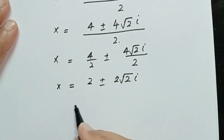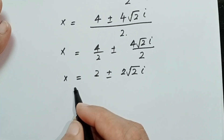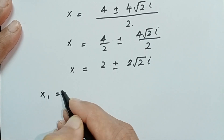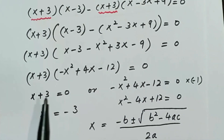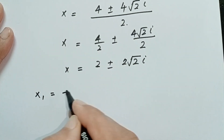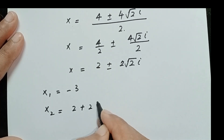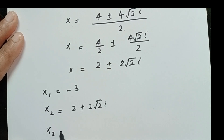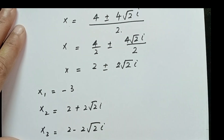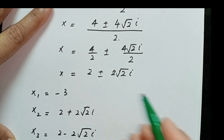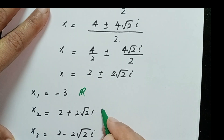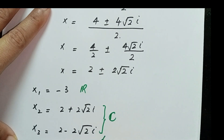So we have three solutions in total. x₁ = −3, which is the real solution. x₂ = 2 + 2√2·i and x₃ = 2 − 2√2·i, which are complex solutions because they involve i, the imaginary unit.